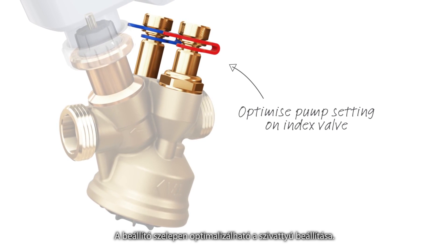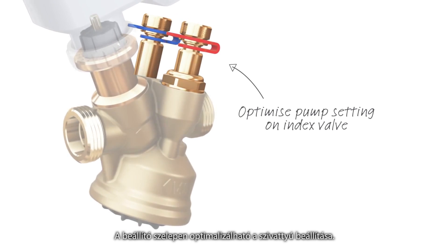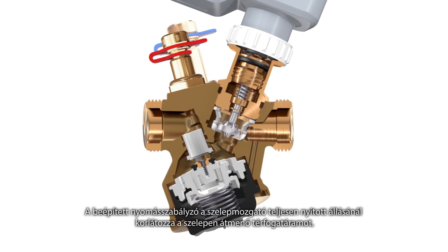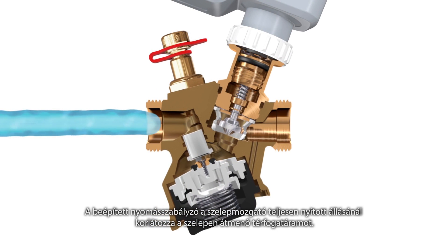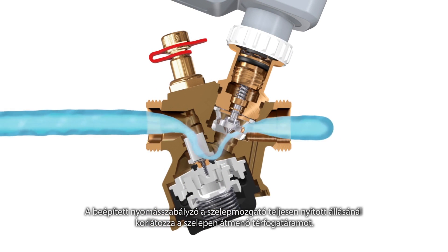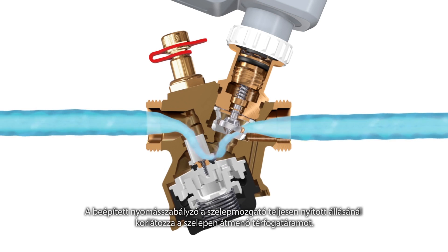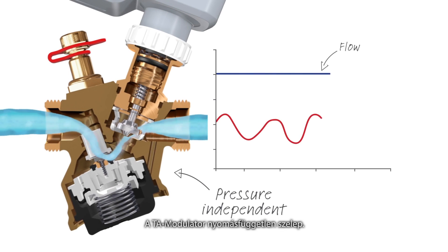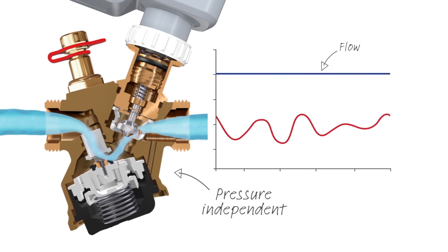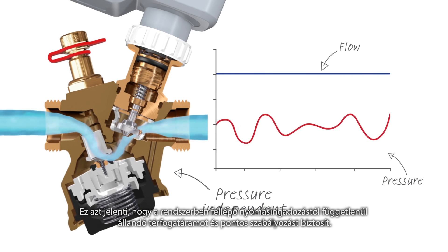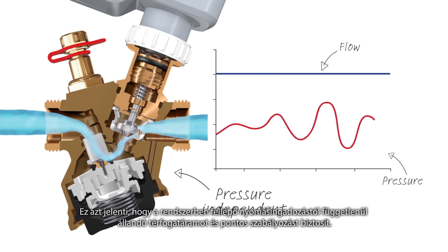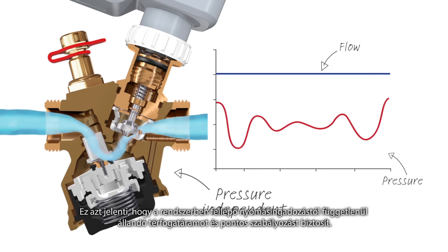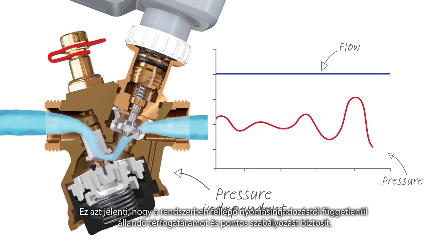On the index valve, you can optimize pump setting. The built-in pressure controller limits the maximal flow through the valve when the actuator is fully open. TA Modulator is a pressure-independent valve — it keeps the flow constant regardless of pressure fluctuations in the system and guarantees high control authority.